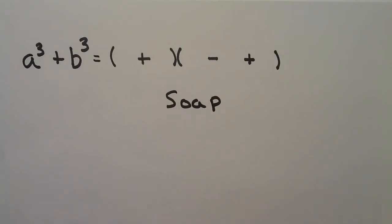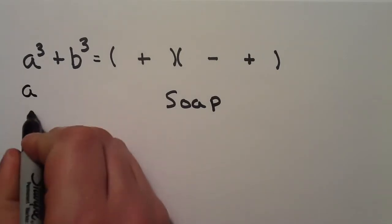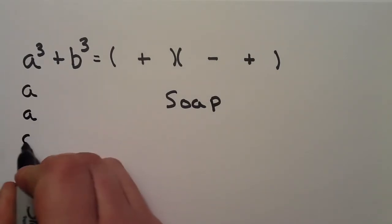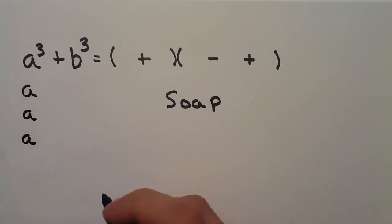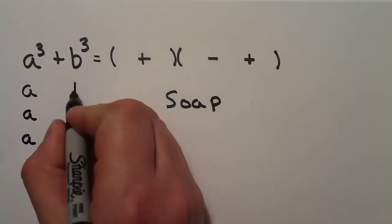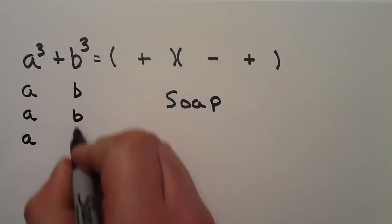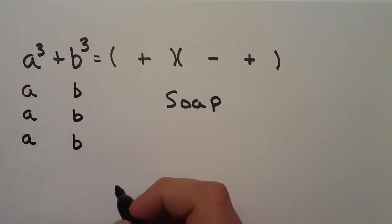Now, I want to find three things that multiply together to get me to an a cubed. A times a times a gives me an a cubed. And b times b times b gives me a b cubed.